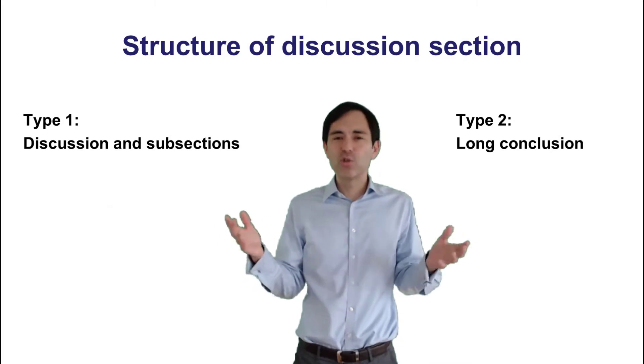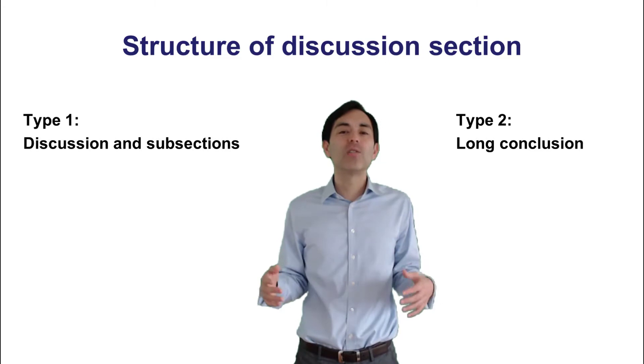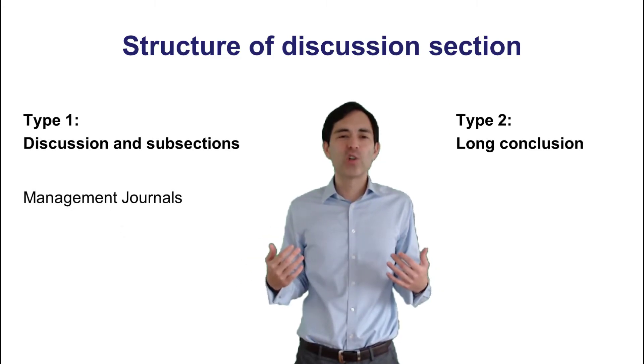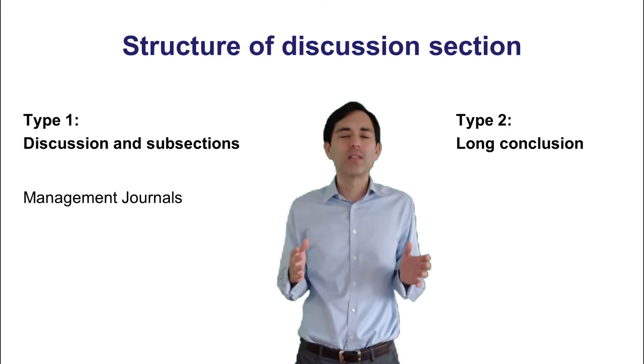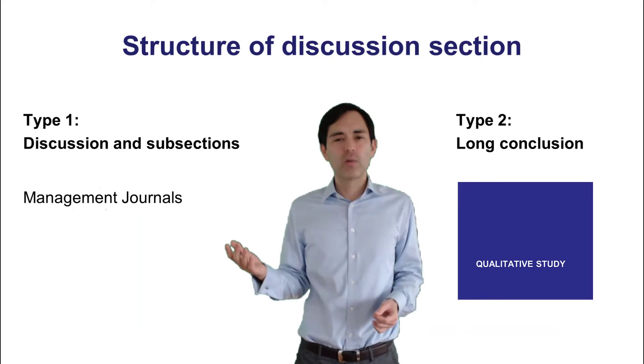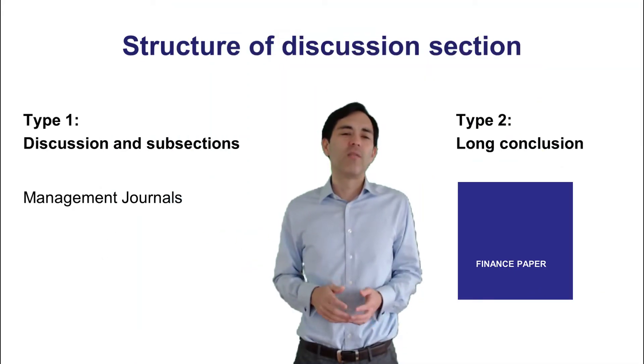Which type should you use? That very much depends on your target journal and also your field of study. So, in management journals, type one, if it's quantitative, would be fairly common. If it's a qualitative study, type two is also fairly common. Or if it's a finance paper, also type two would be very common.